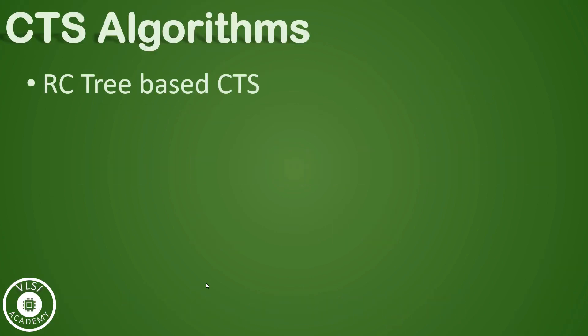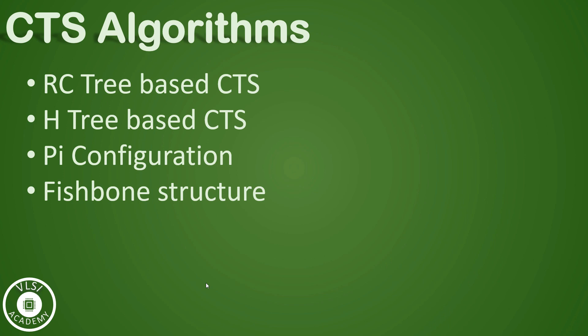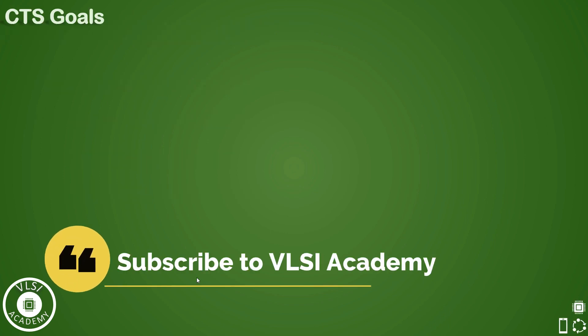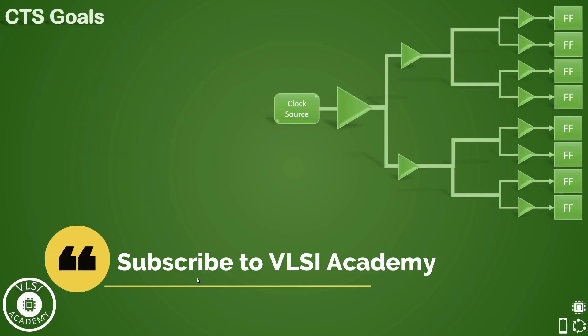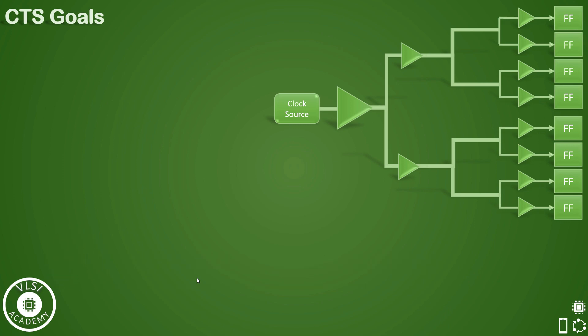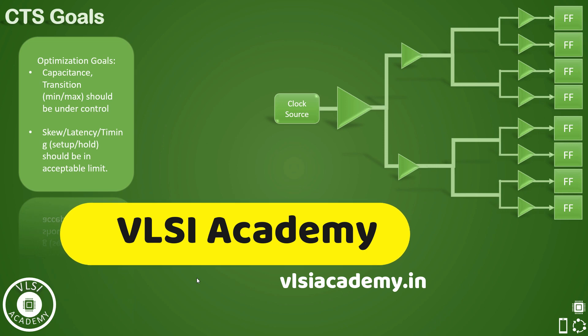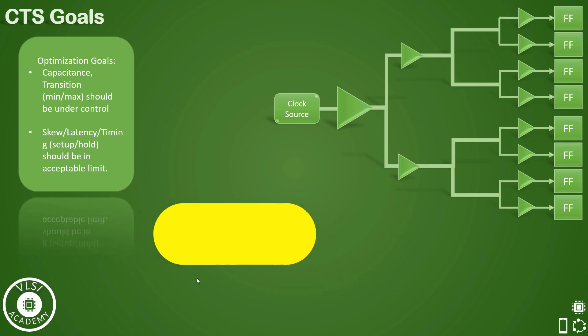If you have seen previous videos, then you must be aware that these are the CTS configurations that we have discussed already. While analyzing the clock tree, we check whether the targets that we have set in our specification file are met or not. Here are some of the goals such as CAP and TRAN targets which tool try to meet during the building of the clock tree.